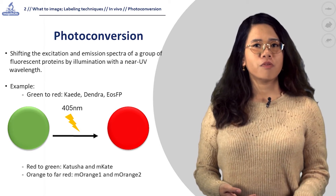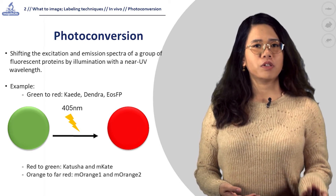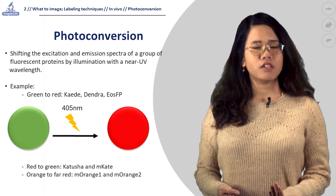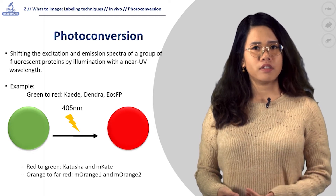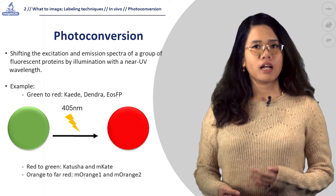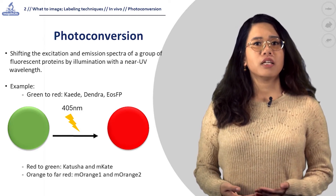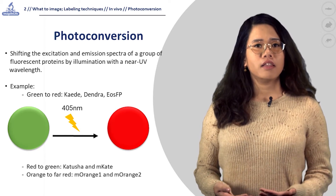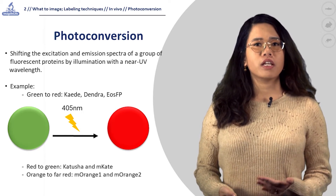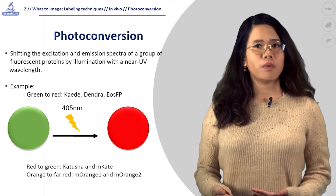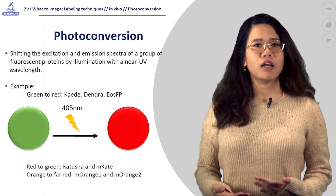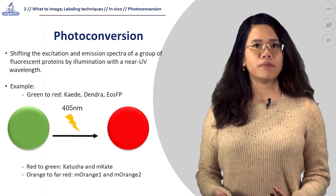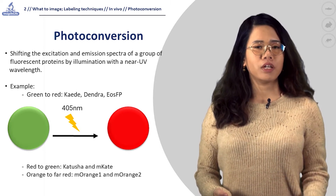These proteins contain a chromophore derived from the tripeptide histidine-62, tyrosine-63, glycine-64, that naturally emits green fluorescence. This chromophore is converted into a red state by a light-catalyzed cleavage of the polypeptide backbone.